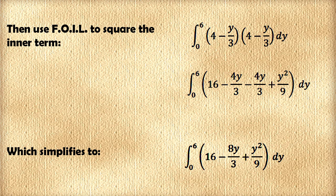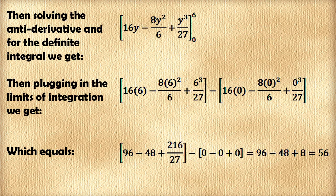Then solving the antiderivative for this definite integral, we get 16y minus 8y squared over 6, plus y cubed over 27, evaluated from 0 to 6.